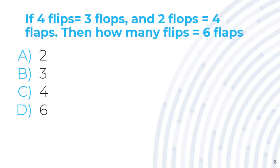And that last question is: if 4 flips equals 3 flops and 2 flops equal 4 flaps, then how many flips equals 6 flaps? So, when it says 2 flops equals 4 flaps, we can change it into 1 flop equals 2 flaps. And we notice that 4 flips equals 3 flops.